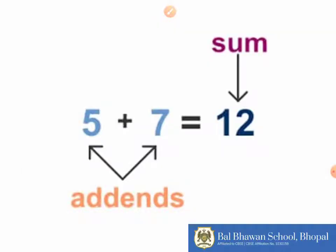For example, 5 and 7 are added to give 12. Here 5 and 7 are called addends and 12 which is the result is called sum. So the result of addition is known as sum.